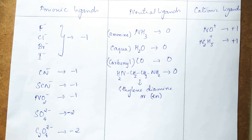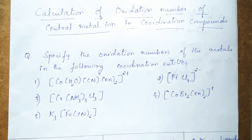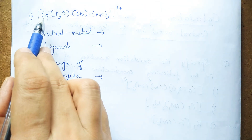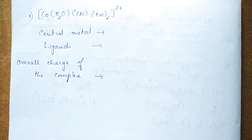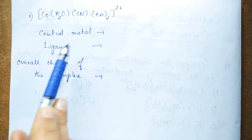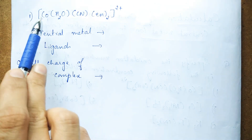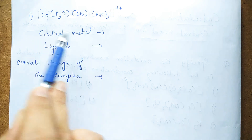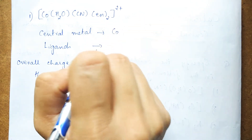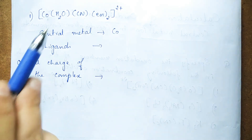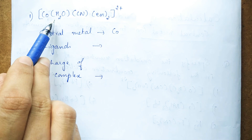Now that you have basic knowledge about ligands and their charges, we can easily calculate the oxidation number of the central metal ion. For the first example, [Co(H₂O)(CN)(en)₂]²⁺, identify the central metal ion, ligands, and overall charge of the complex. Remember: within the square bracket, the central metal ion is written first, so here the central metal ion is cobalt.